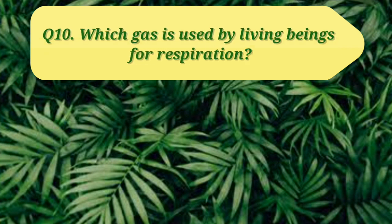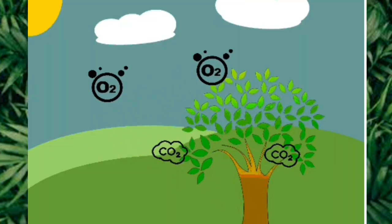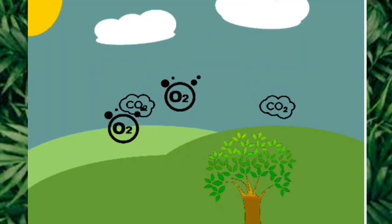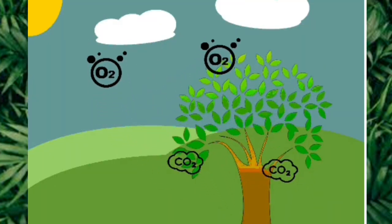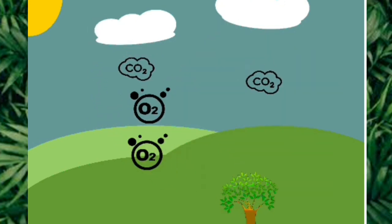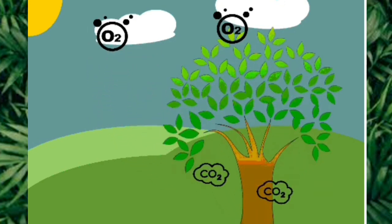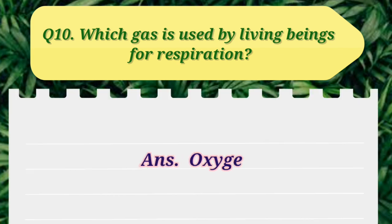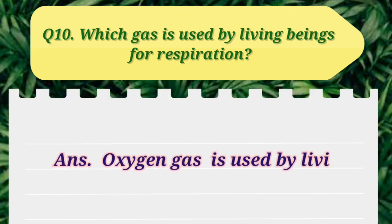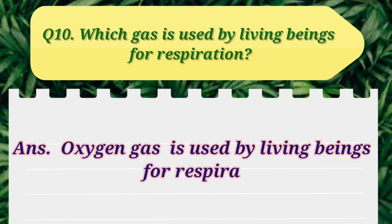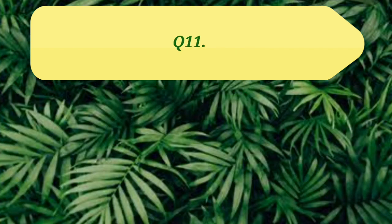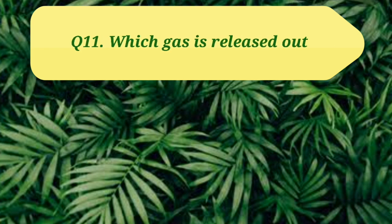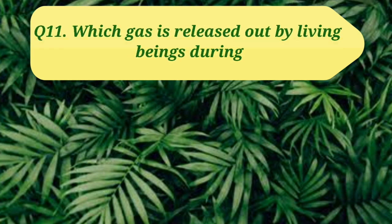And now question 10: Which gas is used by living beings for respiration? Children, you have learnt that plants use carbon dioxide gas and living beings use oxygen gas for respiration. So let us write the answer: Oxygen gas is used by living beings for respiration.